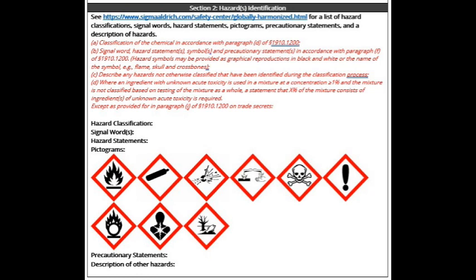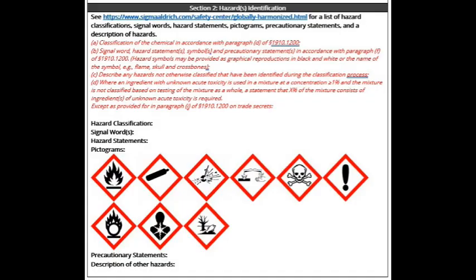The second line in this section is signal word, hazard assessments, symbols, and precautionary statements. In accordance with paragraph F of 1910.1200, hazard symbols may be provided as graphical reproductions in black and white, or as the name of the symbol — for example, flame or skull and crossbones. There are only two signal words used in all classes of hazards: danger and caution. Danger is the more severe and caution is the lesser. A hazard statement describes the nature and degree of the hazard and is specific to the hazard classification category. End users should always see consistent hazard statements regardless of who produces the chemical. All applicable hazard statements must appear on the label, though they may be combined to reduce redundancies and improve readability.